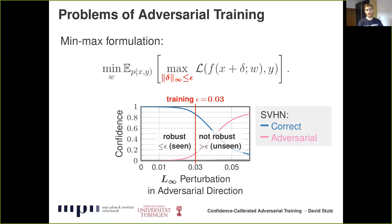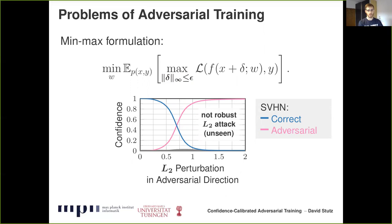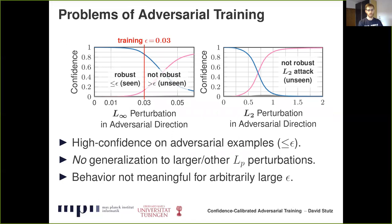However, the obtained robustness does not generalize to larger L-infinity perturbations. Adversarial examples can easily be found right beyond the epsilon ball and can achieve very high confidence, as shown by the pink line. Similarly, training on L-infinity adversarial examples does not generalize to other threat models — shown here for L2 adversarial examples. High-confidence adversarial examples can easily be found with comparably low L2 norm. Overall, by enforcing high-confidence predictions on adversarial examples, adversarial training is unable to generalize robustness to unseen threat models.